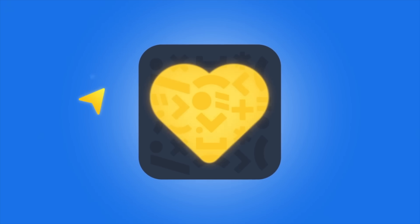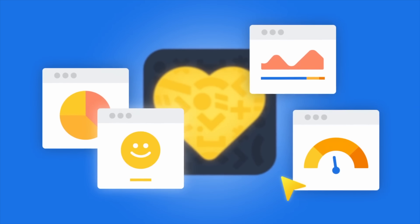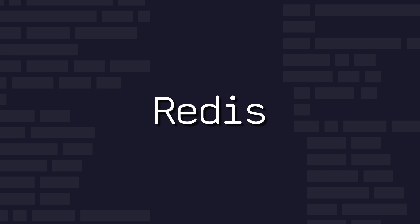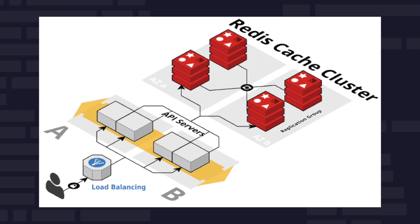Redis is an in-memory data structure store used as a database, cache, and message broker. Its high performance and support for various data structures — such as strings, hashes, and lists — make it invaluable for scenarios requiring fast access to data, such as caching.